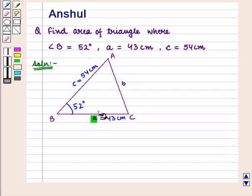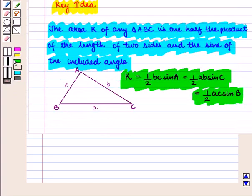We are given A and C and the included angle B. So, we can use the result that K is equal to 1/2 × AC × sin B.